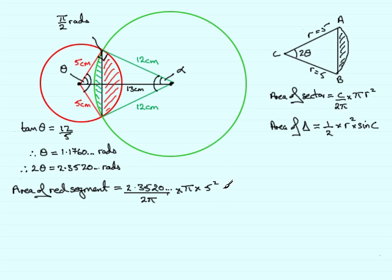and now I need to take away the area of the triangle. And the area of the triangle will be half times the product of the two sides. The radius, that'll be 5 times 5, 5 squared, times the sine of the included angle. And the included angle is my 2 theta, which is 2.3520 and so on.